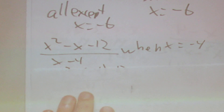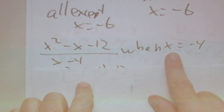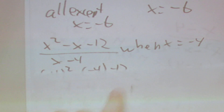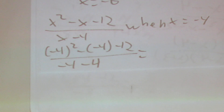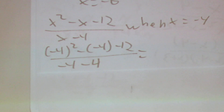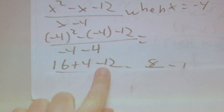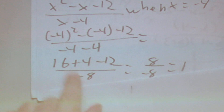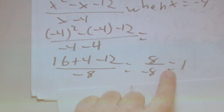Then you're going to have one where you get something like x squared minus x minus 12 over x minus 4, and you have to evaluate when x equals negative 4. So you just put negative 4 in every time you see x. Make sure you put it in parentheses because we're squaring it and also subtracting it, so we want the right signs. So we have negative 4 squared minus negative 4 minus 12 over negative 4 minus 4. That gives us 16 plus 4 minus 12 over negative 8, which is 8 over negative 8, which equals negative 1.